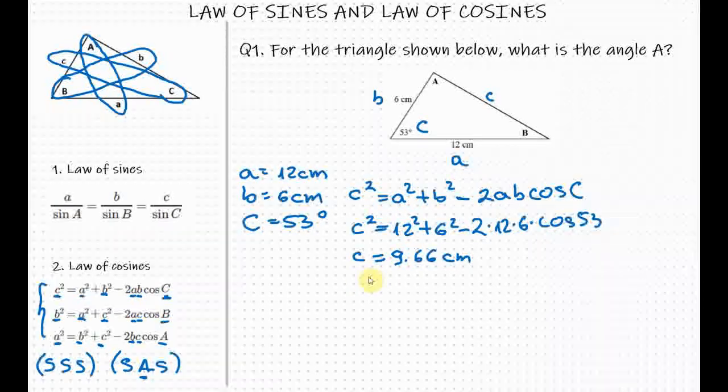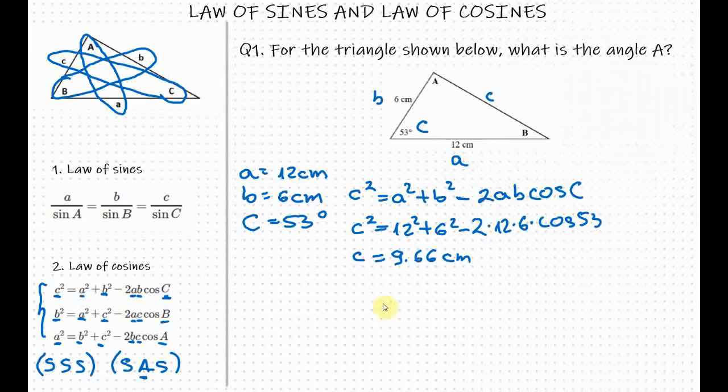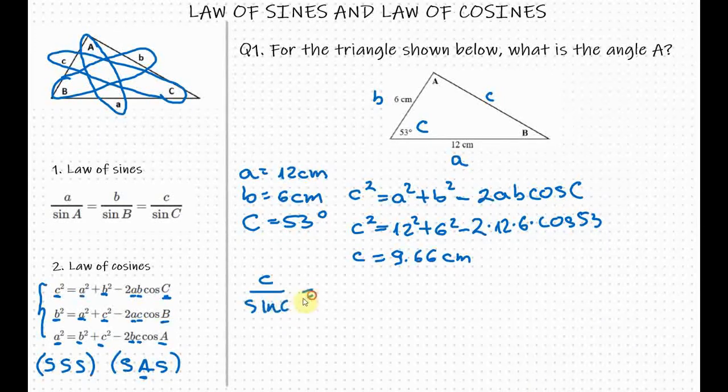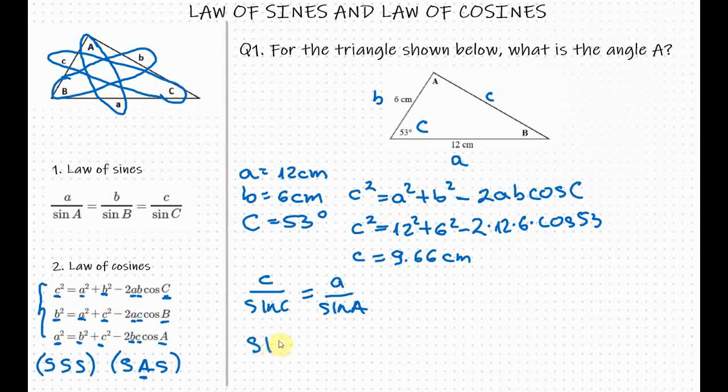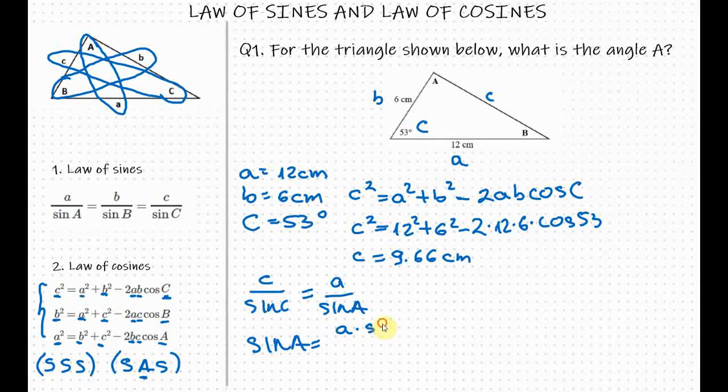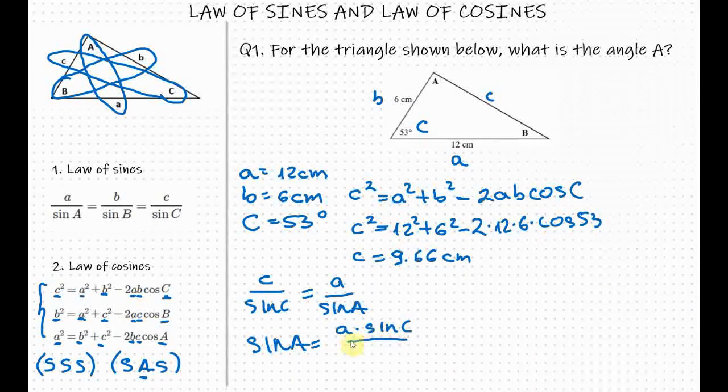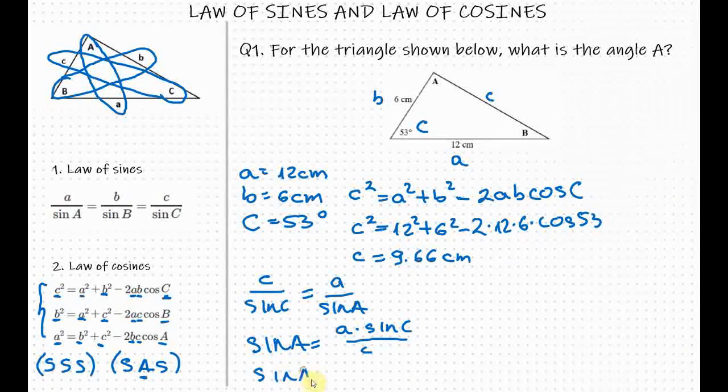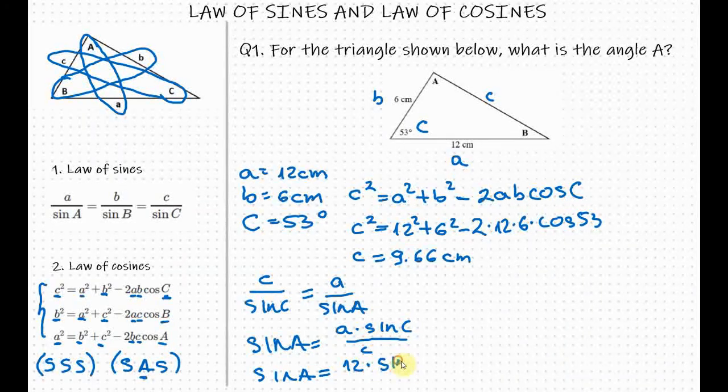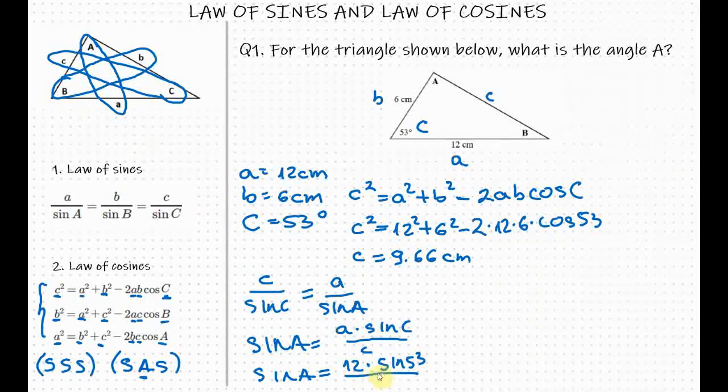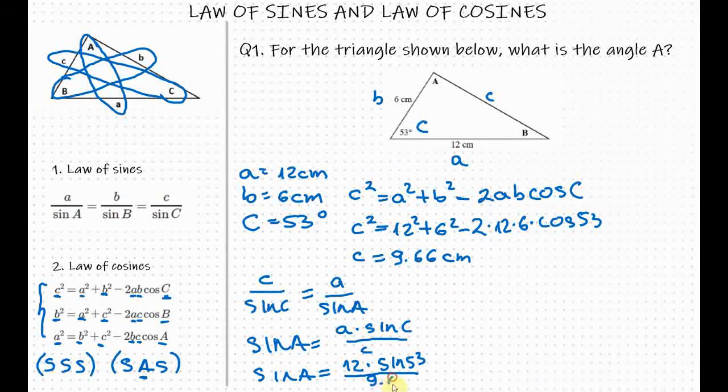Now when I have the side c, I will use the law of sines to find the angle A. So c over sine C equals to a over sine A. Because I need to find the angle A, I will transfer sine A to the other side. So I have sine A equals to a times sine C over c. So sine A equals to 12 times sine of 53 over 9.66.